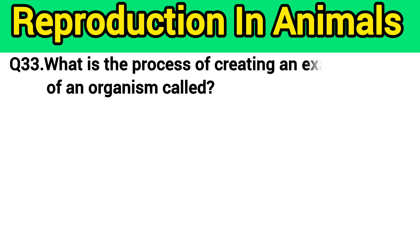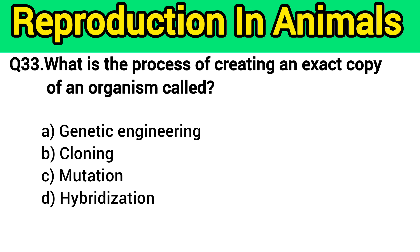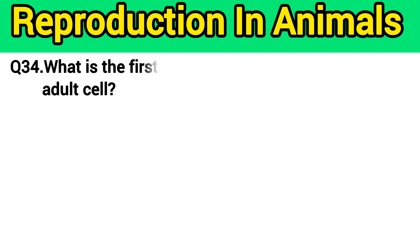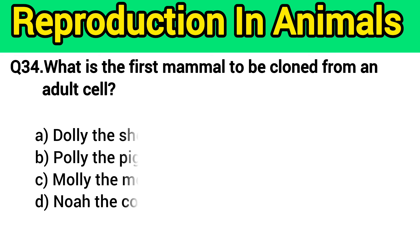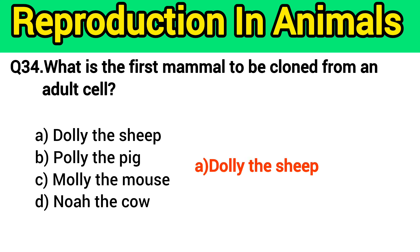Question number 33: What is the process of creating an exact copy of an organism called? The right answer is option B — cloning. Question number 34: What is the first mammal to be cloned from an adult cell? The right answer is option A — Dolly the sheep.